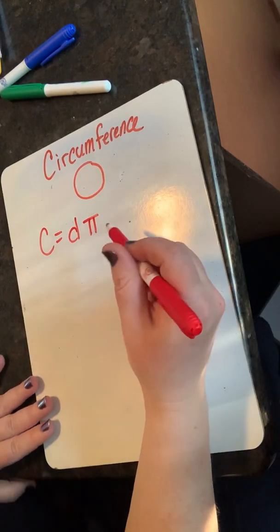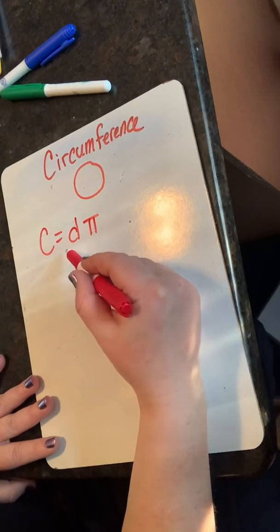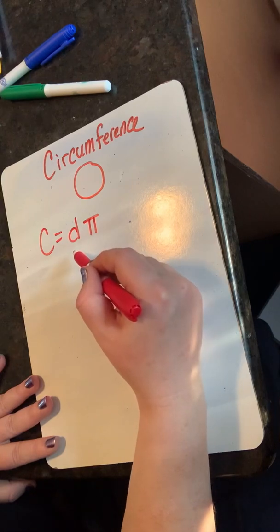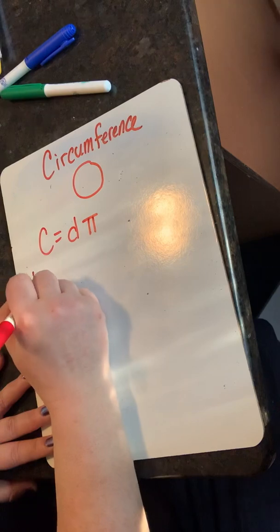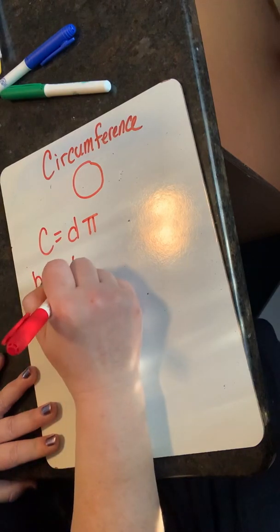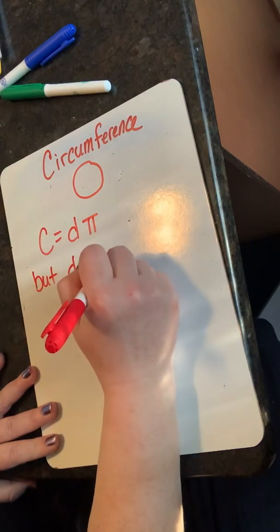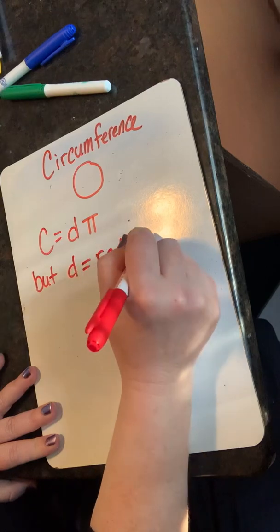The equation for the distance around a circle is circumference equals diameter times pi. La ecuación para la distancia alrededor de un círculo es circunferencia igual al diámetro por pi.